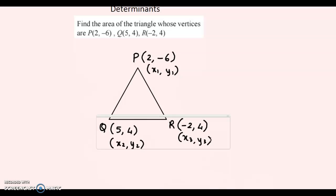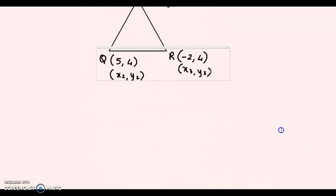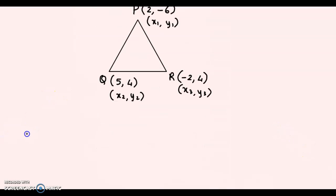Now we can easily obtain the area of triangle PQR. The formula for area of a triangle using determinants is half times the determinant of x₁, y₁, 1; x₂, y₂, 1; x₃, y₃, 1.